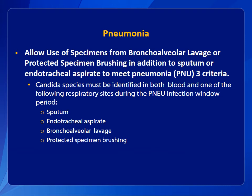Positive tests from bronchoalveolar lavage or protected specimen brushing procedures are now allowed as elements of the infection criterion for pneumonia, or NU3. This is in addition to sputum and endotracheal aspirate tests that identify microorganisms. Positive tests from these sites are more specific than those from sputum or endotracheal aspirate and therefore should be interchangeable in the criterion. A matching positive test for Candida species from blood and from one of these sites during the pneumonia infection window period fulfills the laboratory portion of the NU3 criterion.